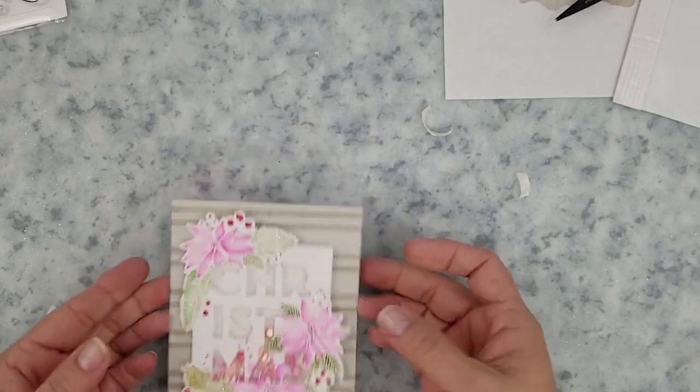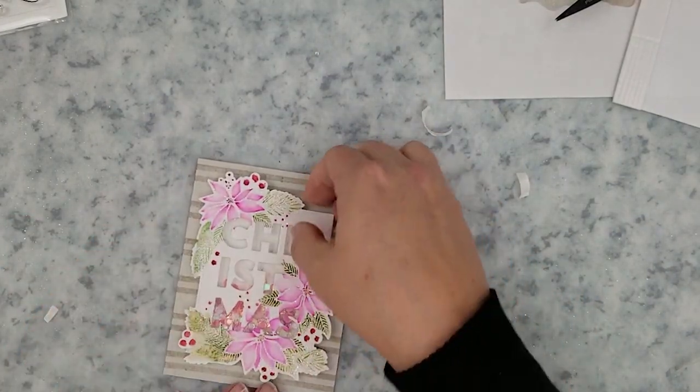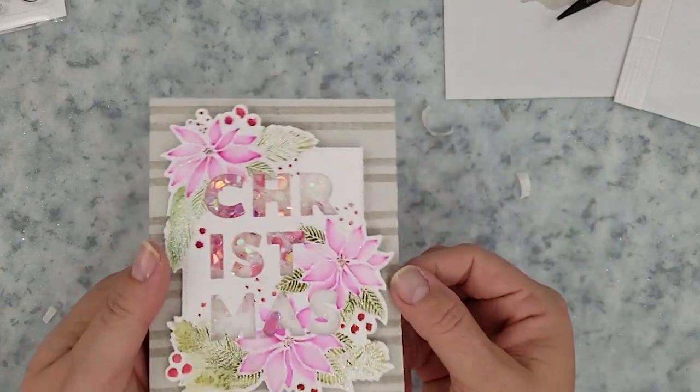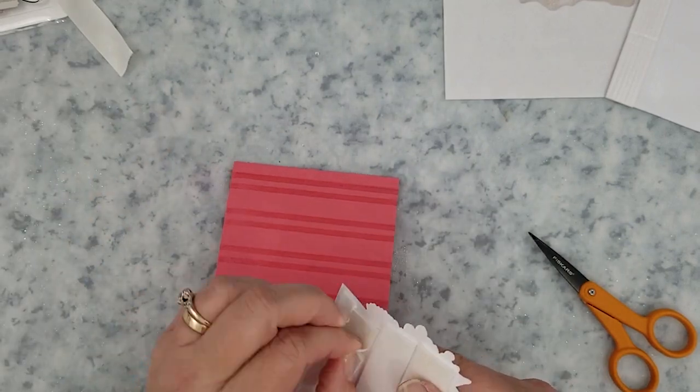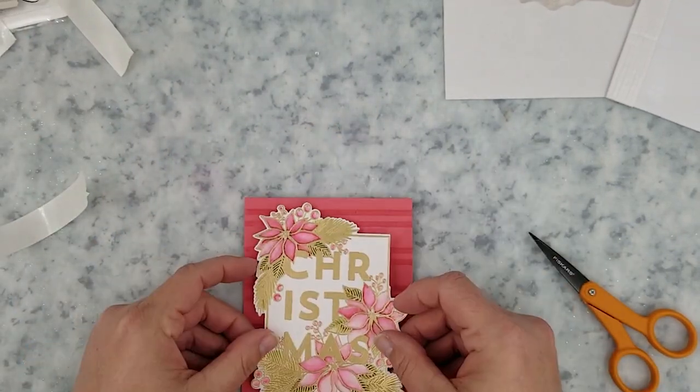Shakers really are so easy to make once you get the hang of them. Okay, so for the next card we're just going to keep this one real simple. We're just going to add mounting foam to the back of that watercolor panel and then we're going to center it on our card base.